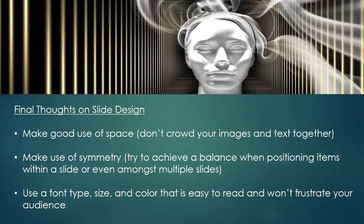Make good use of symmetry. Try to achieve a balance when positioning items both within a slide and between slides. For example, if you have a picture on one side of the slide, be aware of where the central line of the slide is so that you can put the text exactly opposite from the image. Also, always make sure to use a font type, size, and color that's easy to read. If they're not easy to read, they will frustrate your audience.